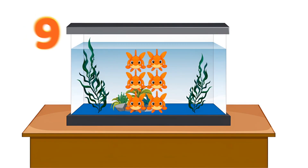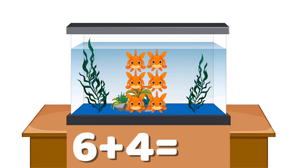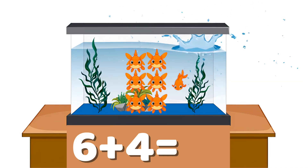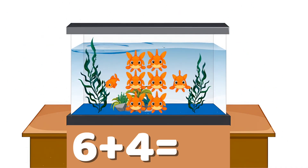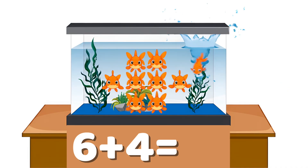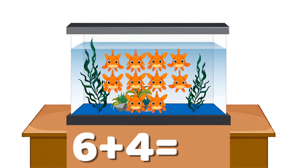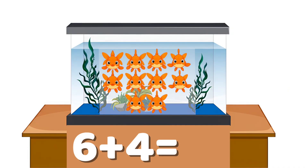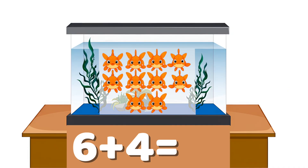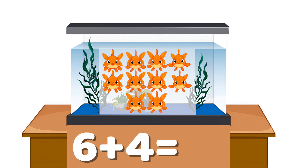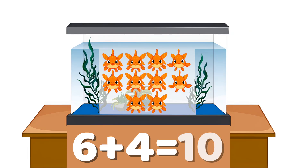Example number nine: six plus four. Six fish are in the tank. Four more fish swim inside. Count all the fish together: one, two, three, four, five, six, seven, eight, nine, ten. Six plus four equals ten.